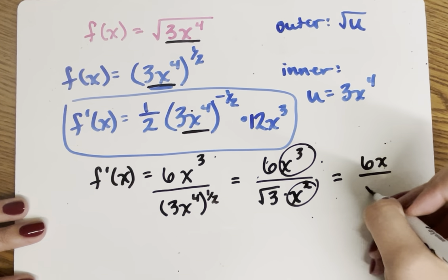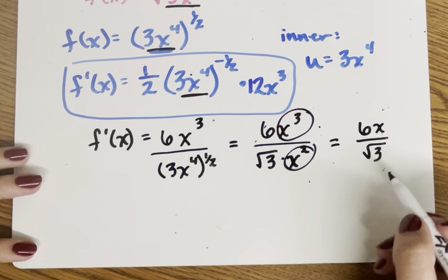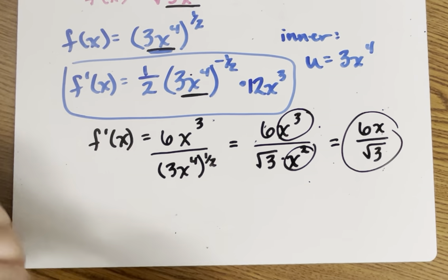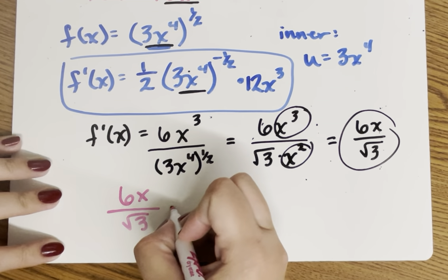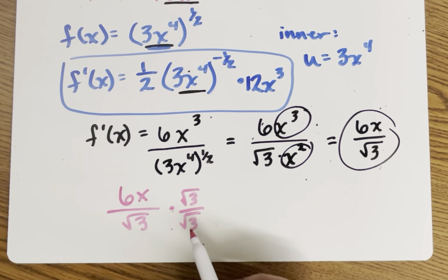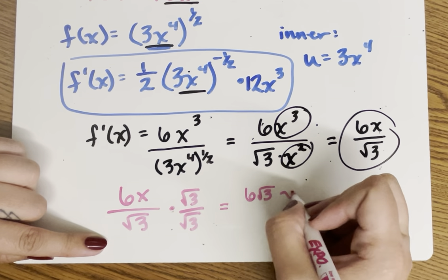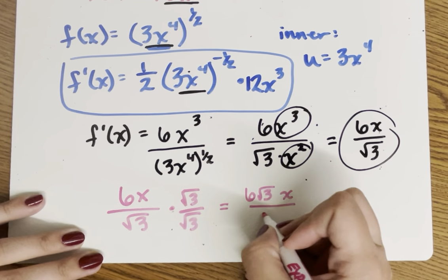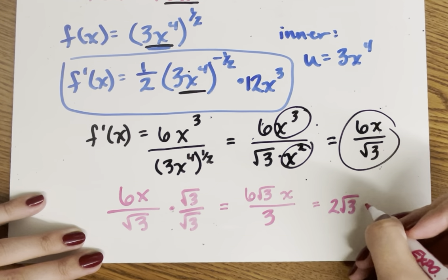There's one other thing from Algebra 2 that a lot of math exams like to do, which is called rationalizing the denominator. So focusing on 6x over radical 3, to rationalize the denominator I'm going to multiply by radical 3 over radical 3. When I do that, I end up with a denominator that is not a radical. So I have 6 radical 3 times x over the square root of 3 times the square root of 3, which is just 3. Then 6 divided by 3 is 2, so the final answer is 2 radical 3 x.